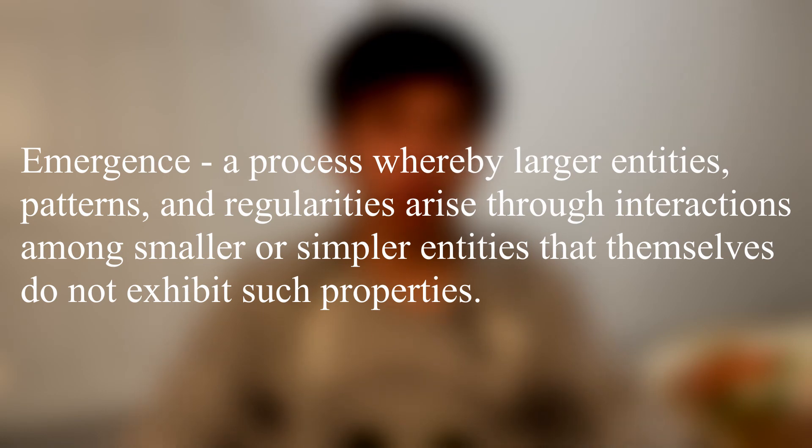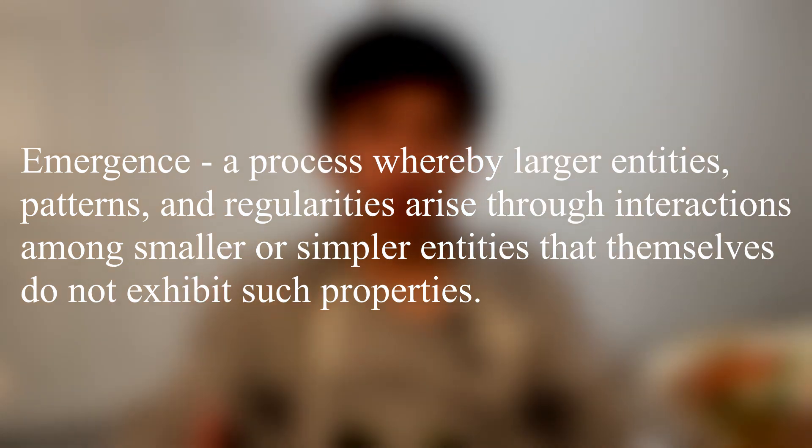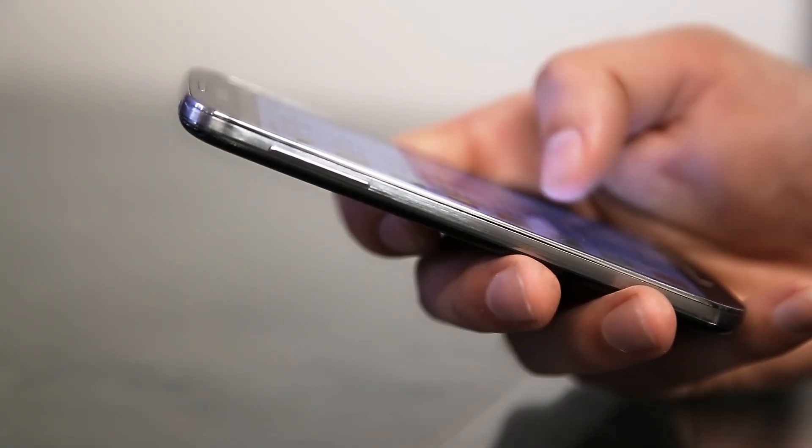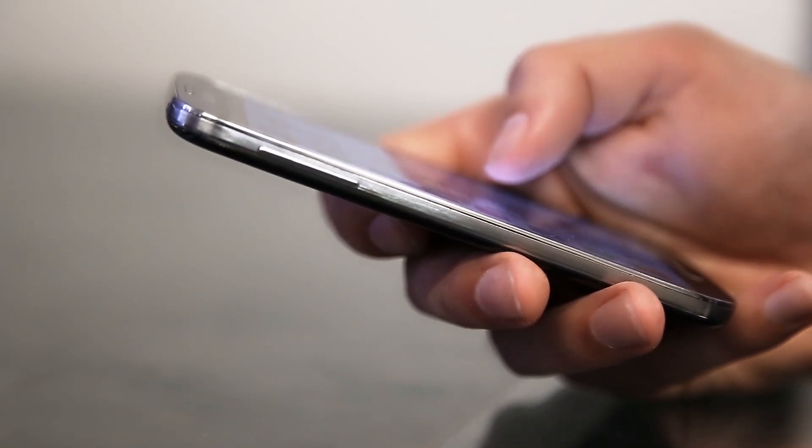Emergence is a process whereby larger entities, patterns, and regularities arise through the interactions between smaller or simpler entities that themselves do not exhibit these properties. Just by looking at how the raw resources of a smartphone — gold, silica, and aluminum — or even higher-level components like cameras, transistors, and chips work separately, won't tell you everything that a smartphone can do. Looking at your internal organs won't tell anyone what sort of person you are. Emergence is how society becomes so rich, why fabricated products like smartphones are worth more than the raw resources that go into them, and probably how life itself came to be.